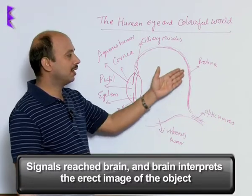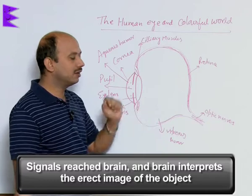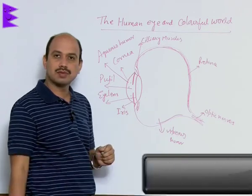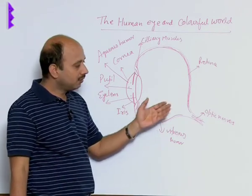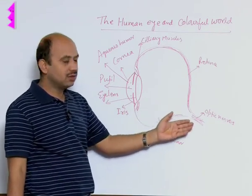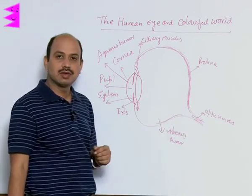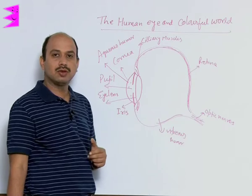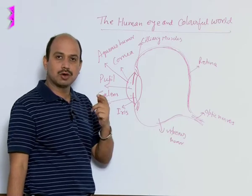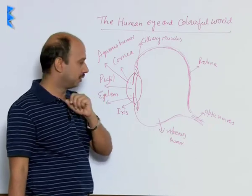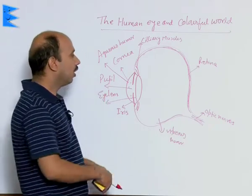Actually, the image formed on the retina is real and inverted, but finally we see an erect image. This is the interpretation of the brain.